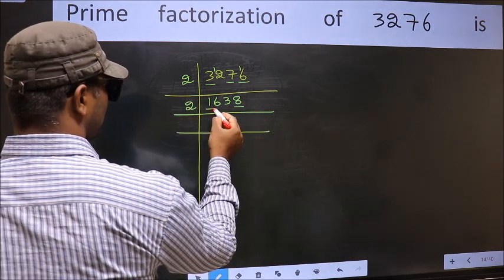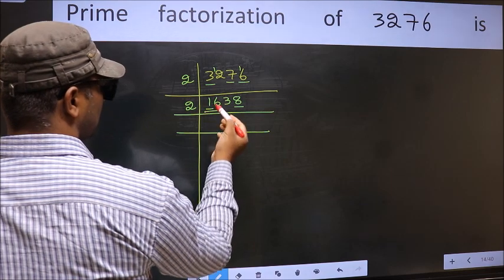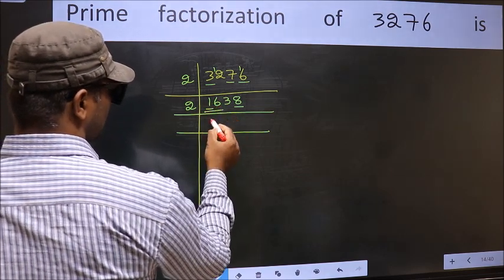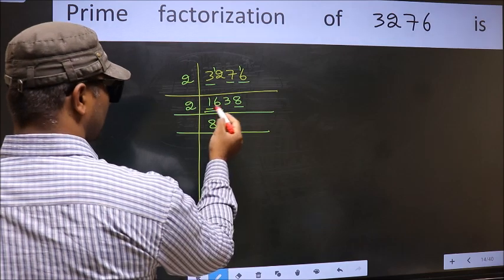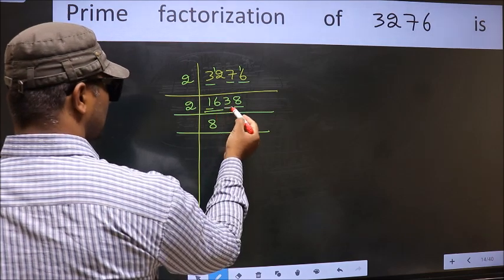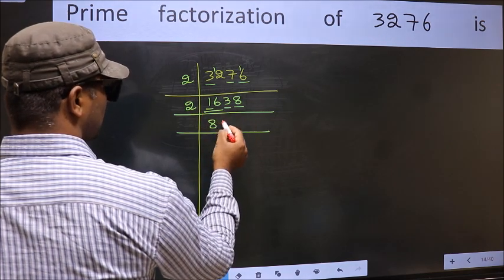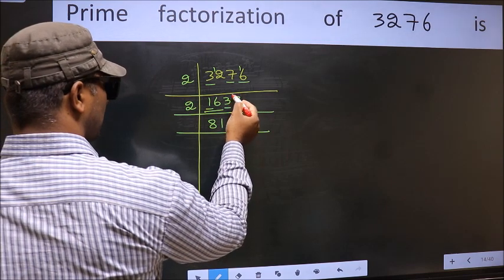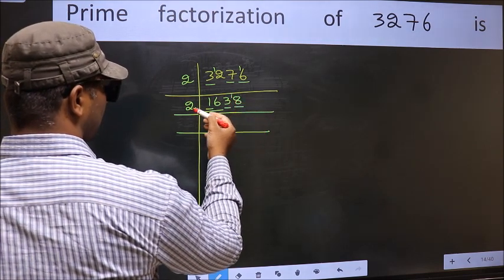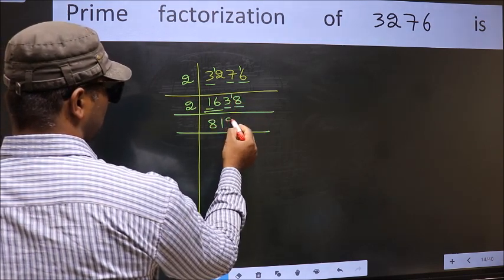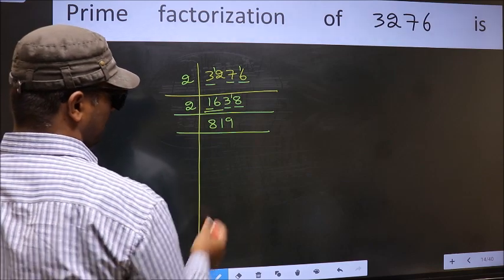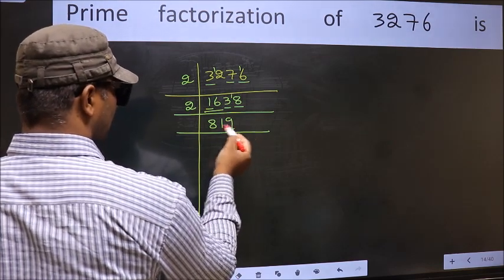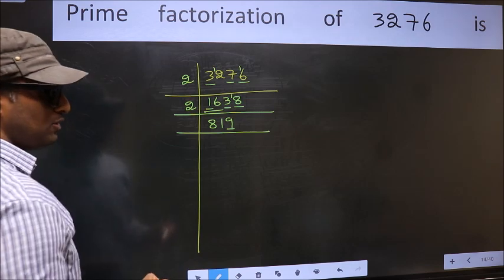First number 1, smaller than 2, so take 2 numbers: 16. When do we get 16 in the 2 table? 2 times 8 equals 16. The other number 3. A number close to 3 in the 2 table is 2 times 1 equals 2. 3 minus 2 equals 1, carry forward 18. When do we get 18 in the 2 table? 2 times 9 equals 18. Now the last digit is 9, not even, so this is not divisible by 2.